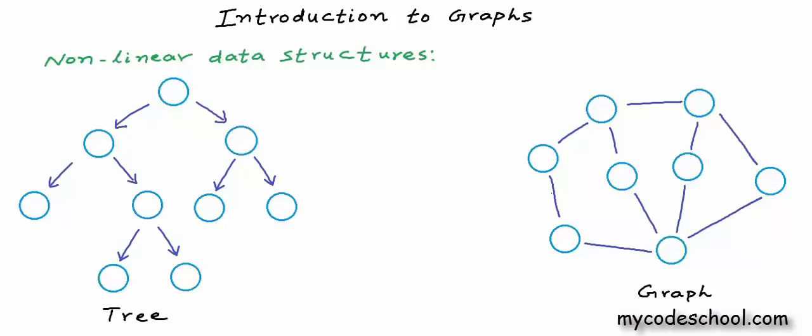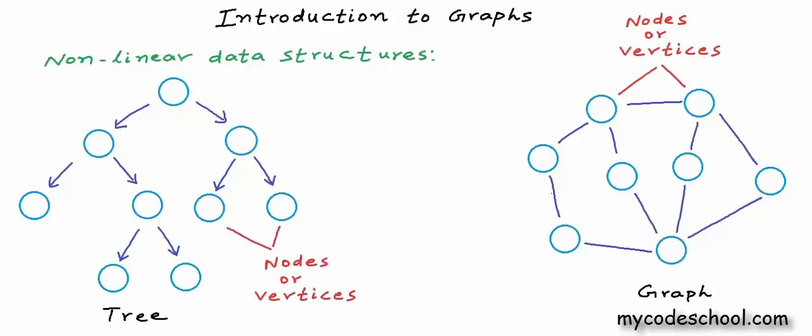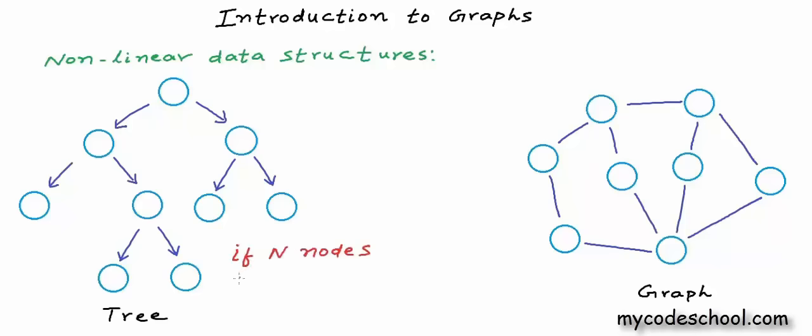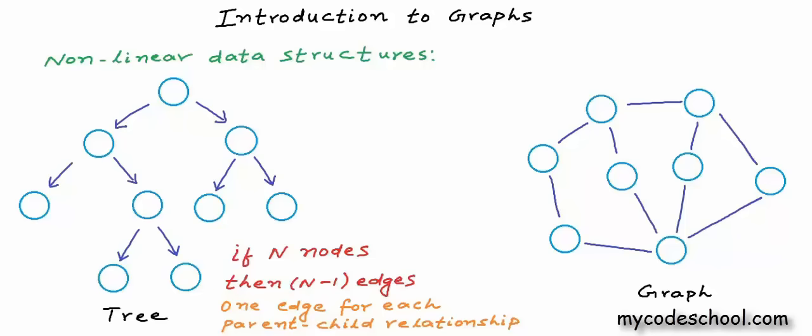A graph, just like a tree, is a collection of objects or entities that we call nodes or vertices connected to each other through a set of edges. But in a tree, connections are bound to be in a certain way — there are rules dictating the connection among the nodes.